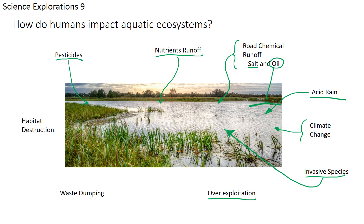Over-exploitation is a global issue — taking too many fish from an ecosystem disrupts the food chain and can cause long-lasting damage to the food web. Waste dumping was also a major problem in Ontario, where factories discharged effluent directly into rivers. Mississauga used to dump sewage into the Credit River; sewage acts as a nutrient, causing algae blooms that decompose, absorb oxygen, kill fish, and destroy the food web.